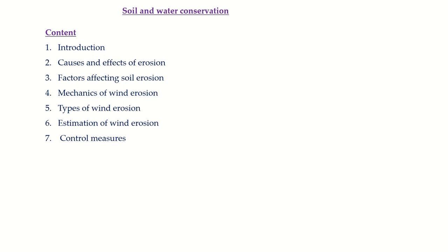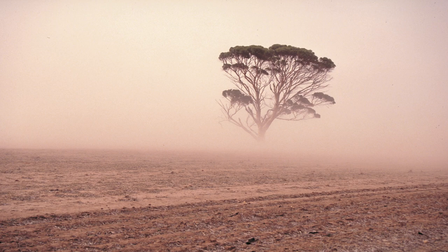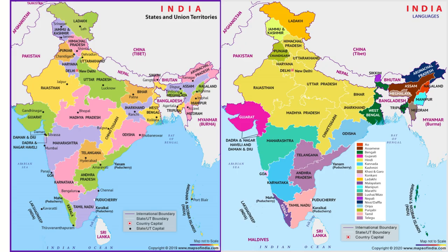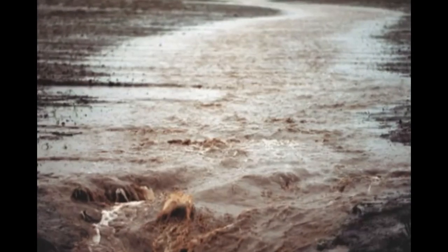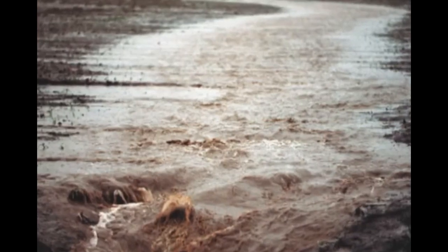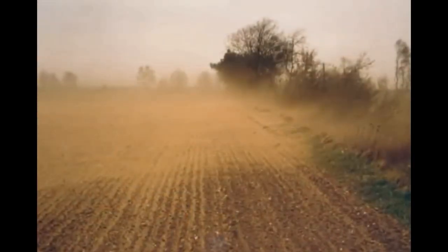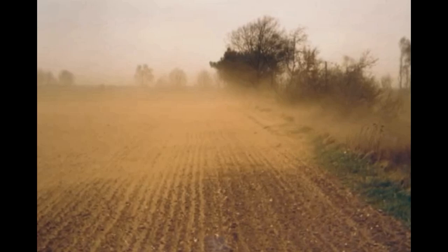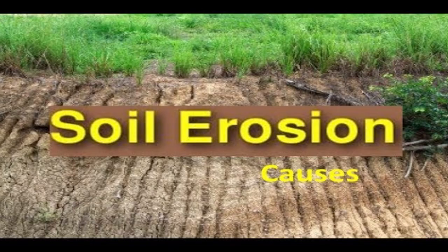Hello friends, today we discuss about wind erosion. In India, every year millions of tonnes of topsoil are lost by soil erosion. Soil erosion is the process of detachment, transportation, and deposition of soil by various agents. Soil erosion leads to decreasing soil quality and reduced crop production.